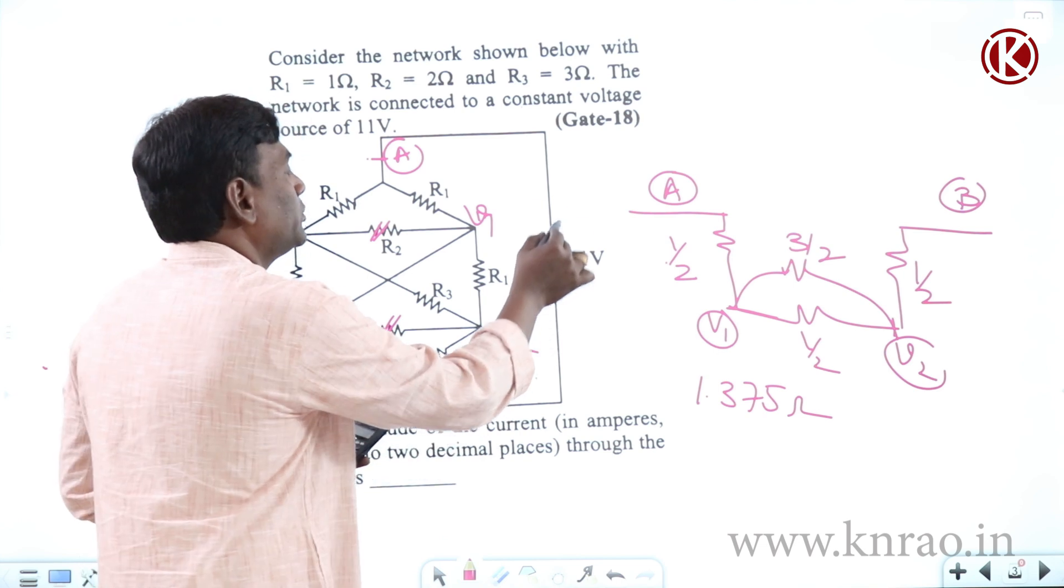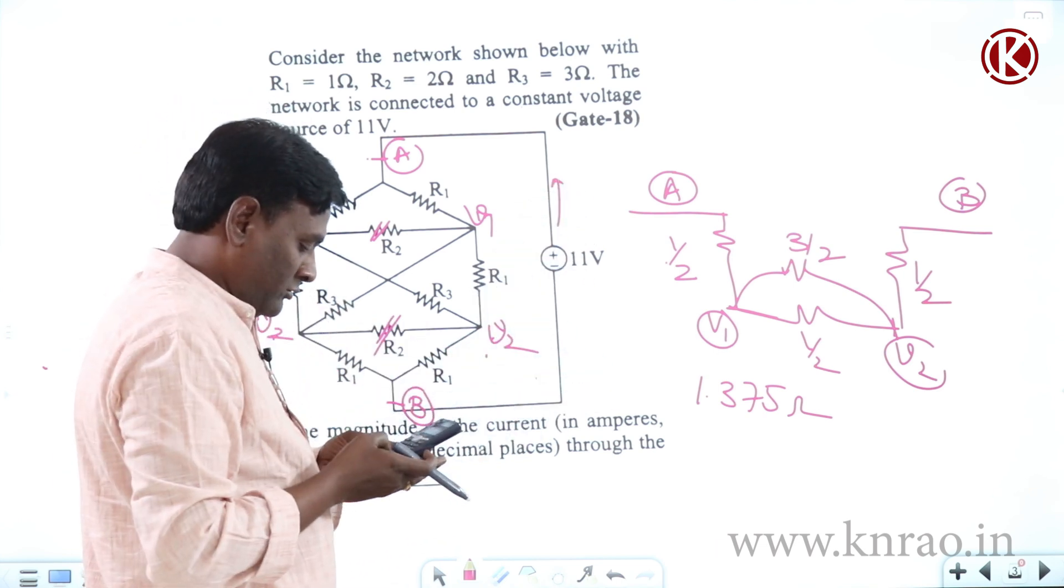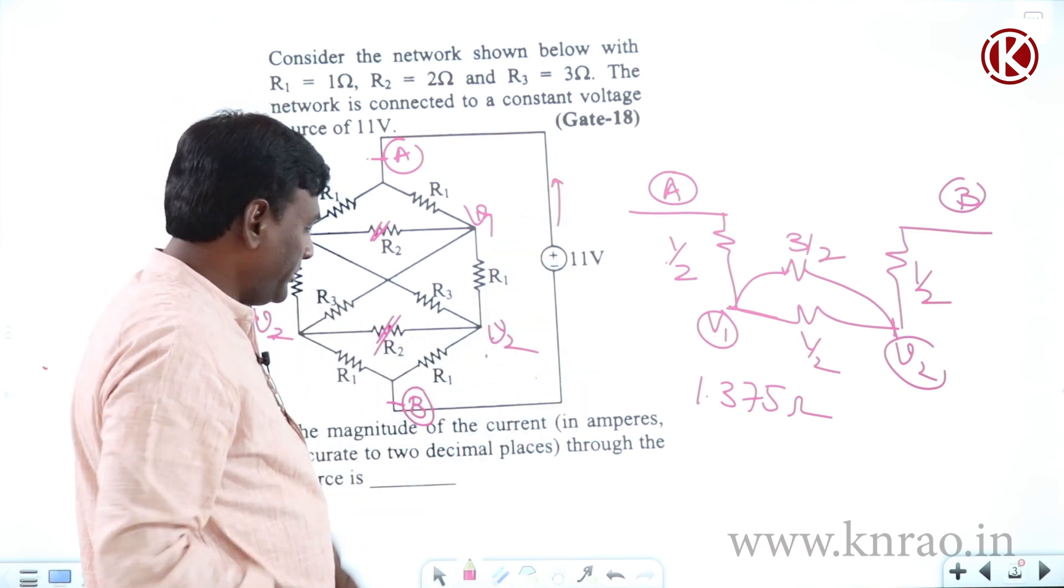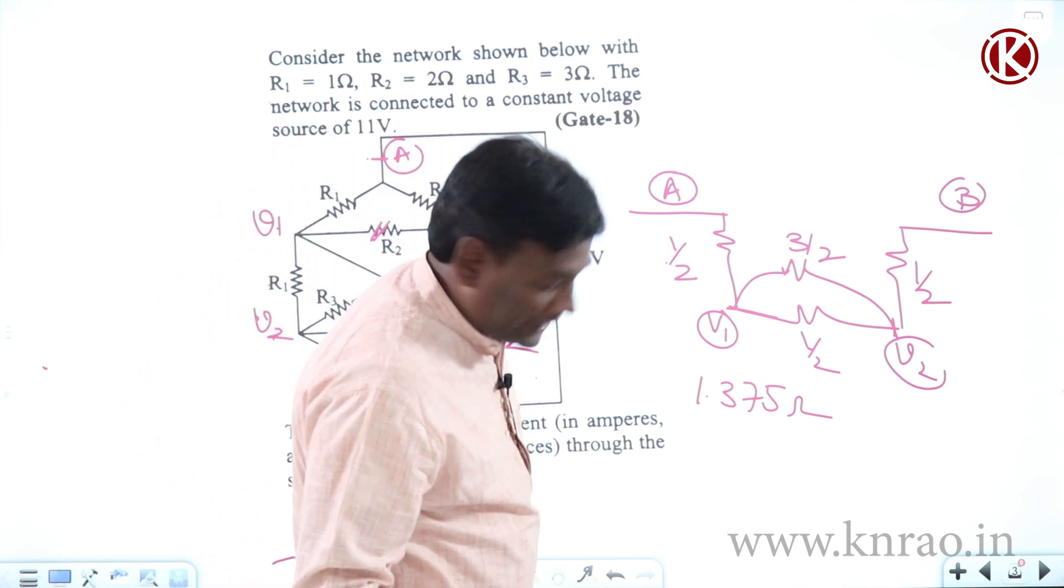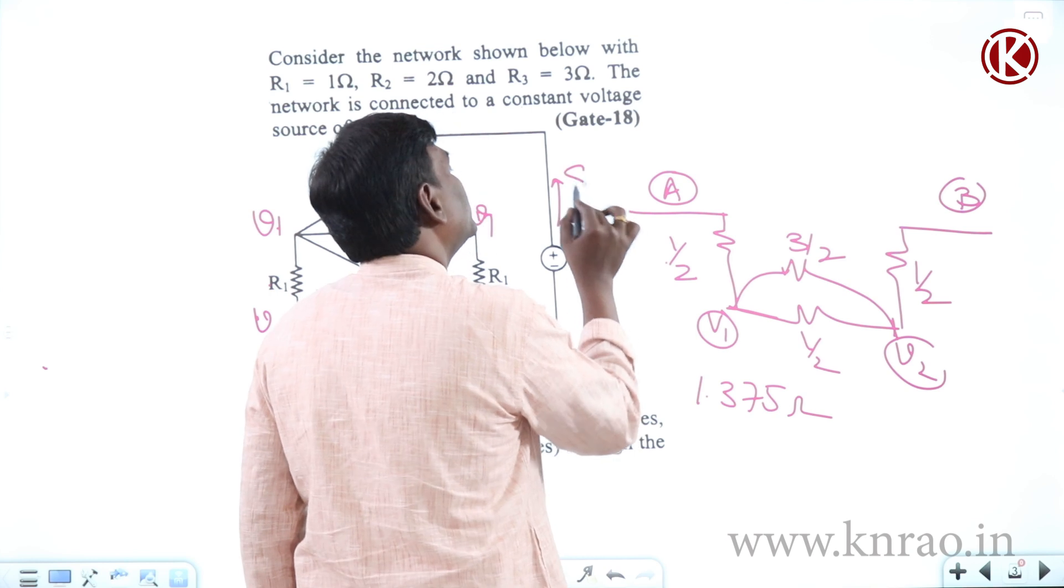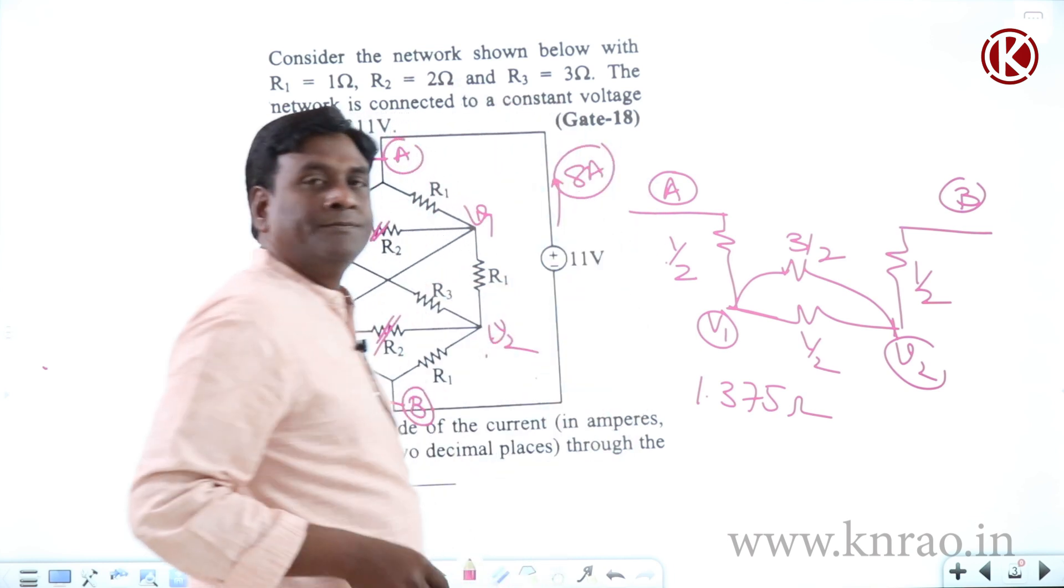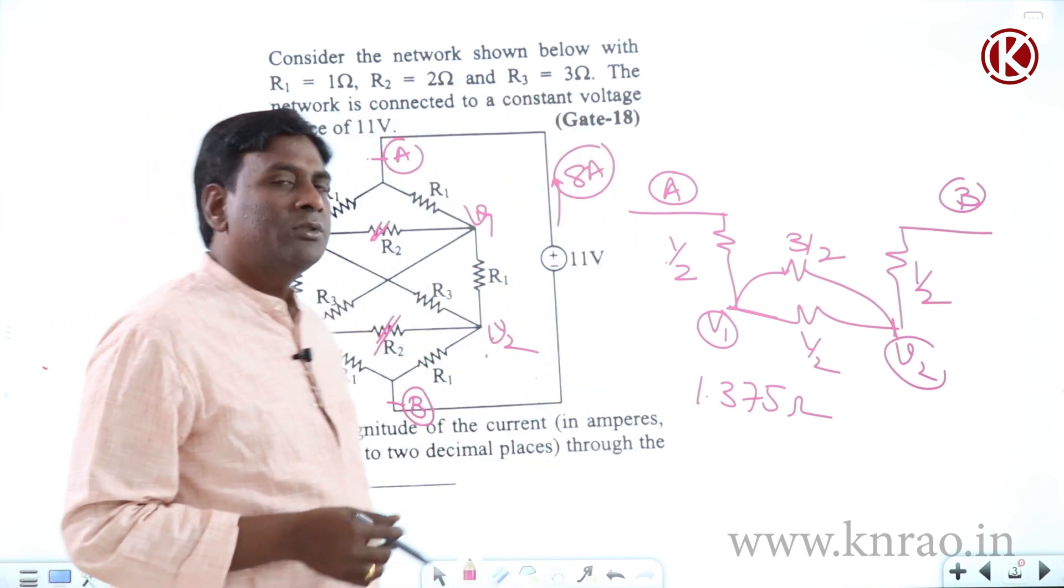Now how much is the current flowing through this? 11 by 1.375 is going to be 8 amperes. So I got 8 amperes, so current flowing through this is 8 amperes. Problem solved.